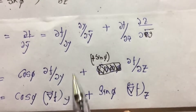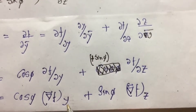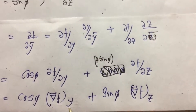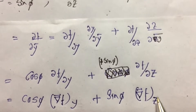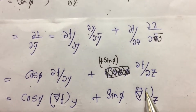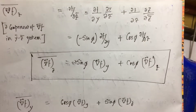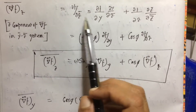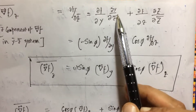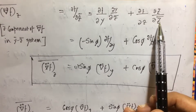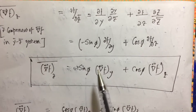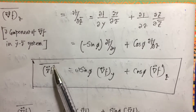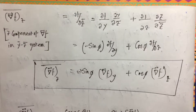So this can be written as the y-component of gradient of f in the y-z coordinate system and the z-component of gradient of f in the y-z coordinate system. Similarly for the z-component in the y_bar z_bar system, we write it out and substitute the values of ∂y/∂z_bar and ∂z/∂z_bar that we already derived, getting the z-component of gradient of f in the new transformed coordinate system.